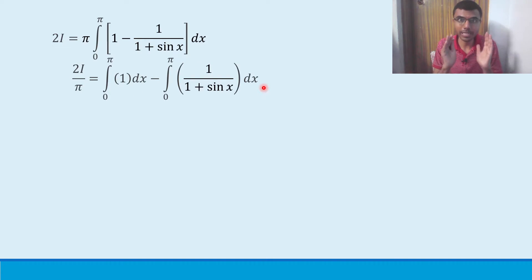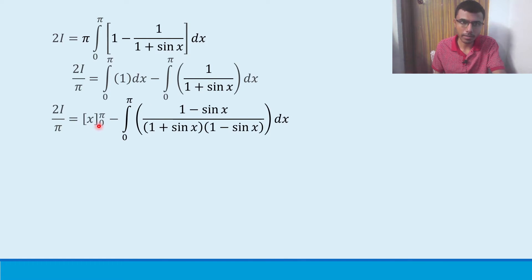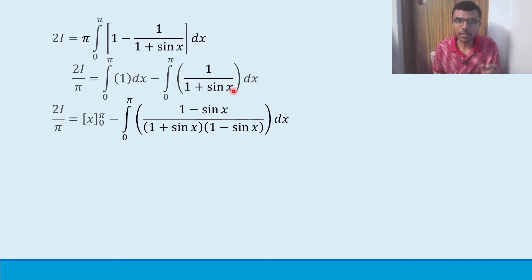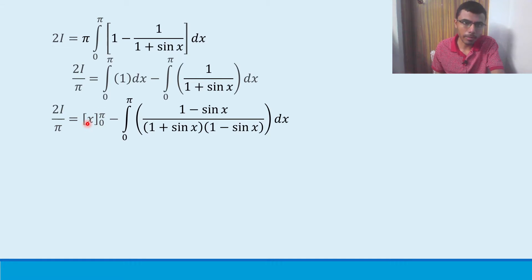The integral of 1 is x, with limits 0 to π. For the second integral, multiply and divide by (1 - sin(x)). The reason: (1 + sin(x))(1 - sin(x)) = 1 - sin²(x) = cos²(x). So the second integral becomes: integral of (1 - sin(x)) / cos²(x) dx.